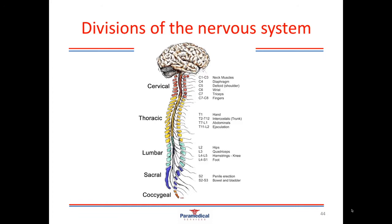The brain is the body's major control center. It receives information sent to it from the spinal cord and the cranial nerves around the head and the face. It analyzes the information and elicits a response for the body.